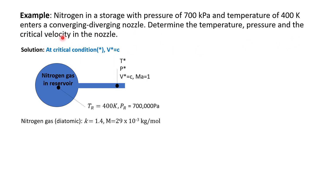The critical velocity here must be the velocity at the critical condition, V*, since the Mach number equals 1. So the question is actually asking: what is the sonic velocity at that point in the nozzle?